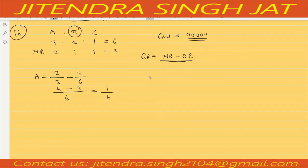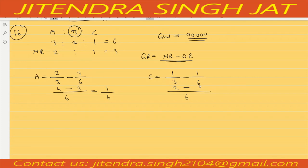For C: new ratio is 1/3, old ratio is 1/6. Taking LCM 6: (2×1=2) minus (1×1=1) = 1/6. It means A and C are gaining equally — their gaining ratio is 1:1.